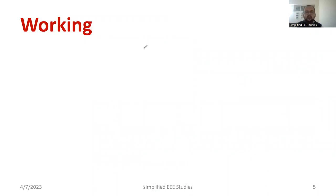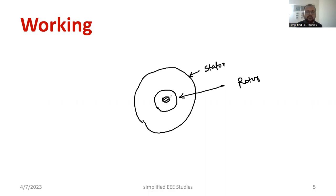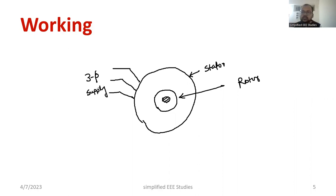To explain the working, first draw the cross-section of a stator — this is the outer part of the induction motor. Next draw the rotor inside it, and mark the shaft. The three-phase supply is given at the stator part — it is 415 volt, 50 Hz AC supply. You can mark R, Y, B since it is a three-phase supply. The stator is made up of silicon steel and the rotor is made up of copper.